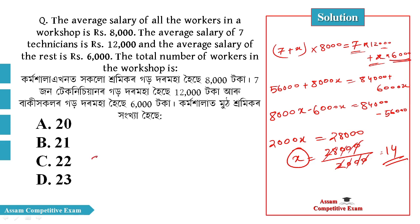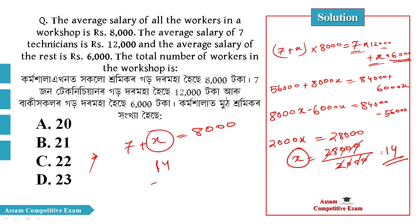Okay, that's right. So x is 14. The total number of workers is 14 plus 7, which is equal to 21.